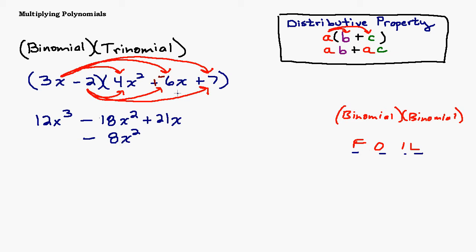And then I have a negative 2 times a negative 6x, so that's a positive 12x. I'm going to put that underneath the 21x so I can add those together easily. And then a negative 2 times a positive 7 is a negative 14, so I'll write minus 14 there.